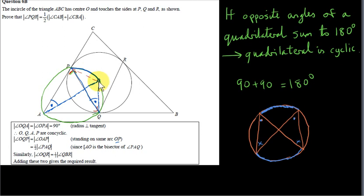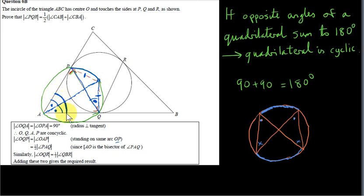The point O is equidistant from the two sides of the triangle, because the distance from O to P and the distance from O to Q are both radii of the incircle. So O lies on the bisector of angle A, which means this angle equals this angle. So angle OQP is half of angle PAQ, and angle PAQ is the same as angle CAB.